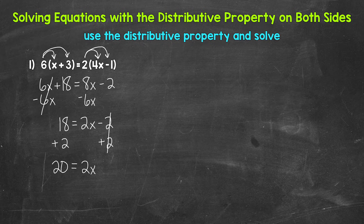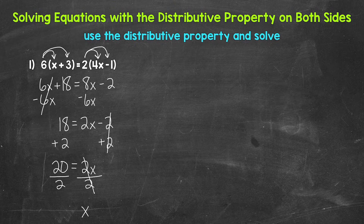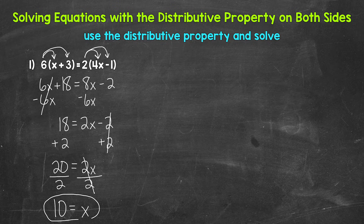So 2 times x equals 20. We isolate x using the inverse operation of multiplication, which is division. We divide both sides by 2. On the right side, the 2s cancel, leaving x isolated. 20 divided by 2 gives us 10, so x = 10.